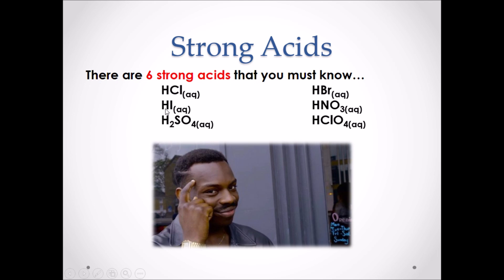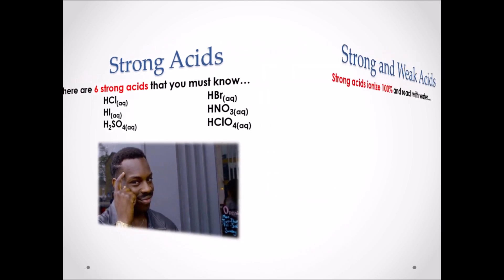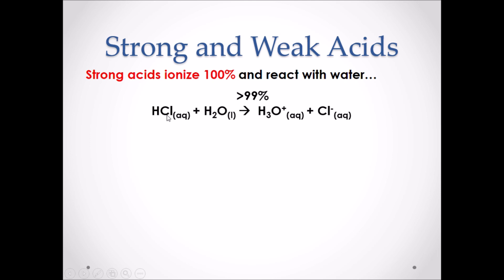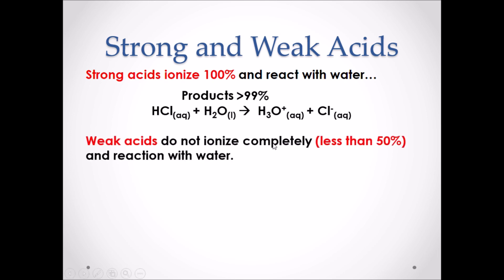The six strong acids are hydrochloric acid, hydroiodic acid, sulfuric acid, hydrobromic acid, nitric acid, and perchloric acid. Strong acids ionize 100% and react with water. In our example, hydrochloric acid is a strong acid — it reacts with water, transferring its hydrogen to water forming H₃O⁺ and its anion Cl⁻. This reaction theoretically proceeds to 100%, so the products are greater than 99%.